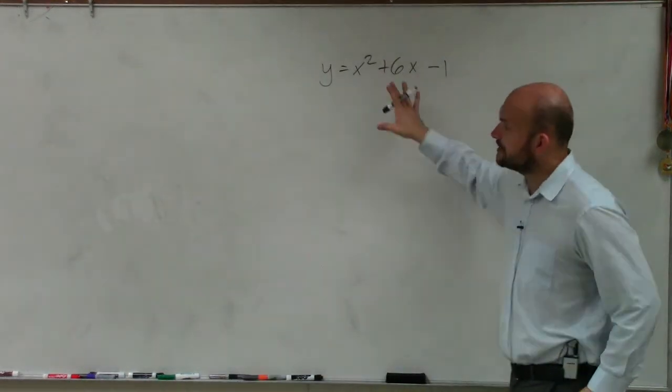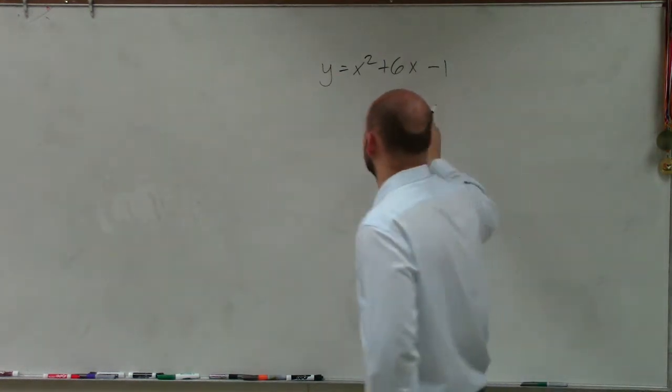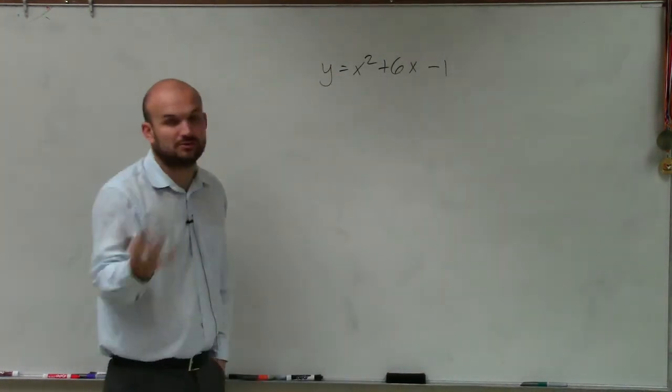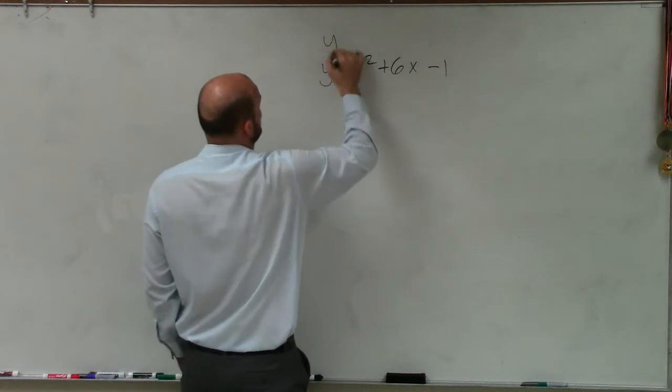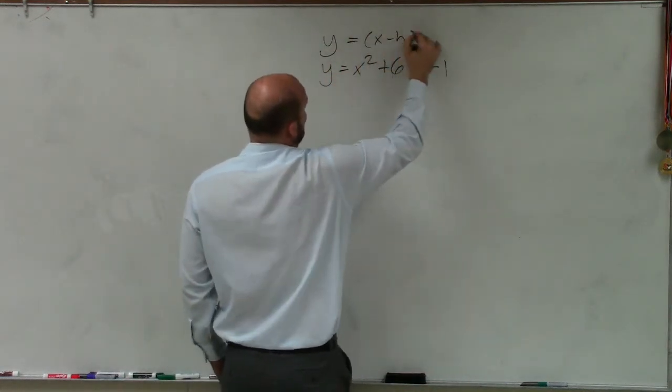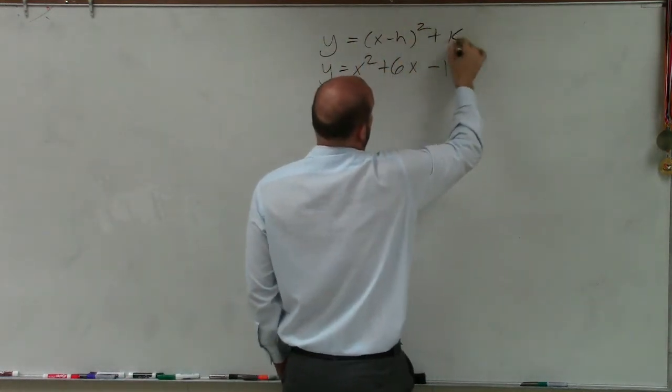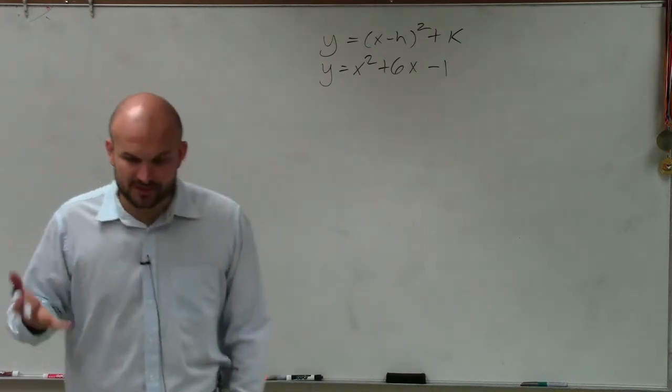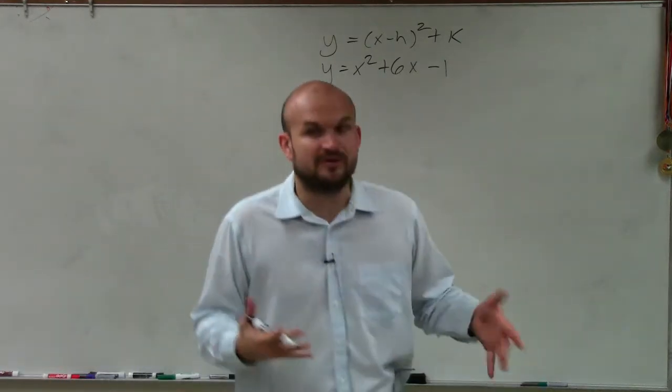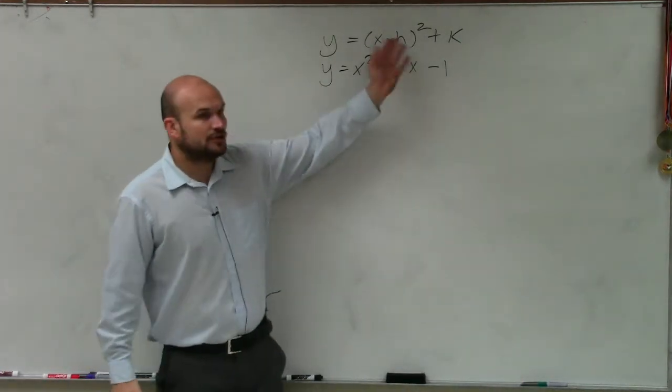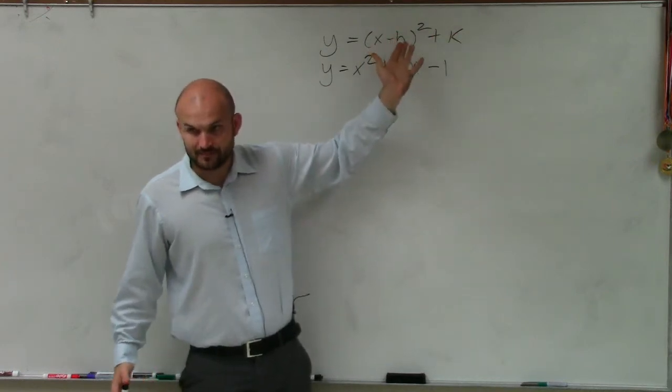So again, for completing the square, if you guys remember, what we're going to do is, in this example, I'm going to complete the square to put this in vertex form. And if you guys remember vertex form, this is y = (x - h)² + k. And completing the square, the reason why we complete the square is, if you guys notice, when we put it in vertex form, you can see we have the h and the k, right? The h and the k. And this is your h, or this is your x, which is squared.